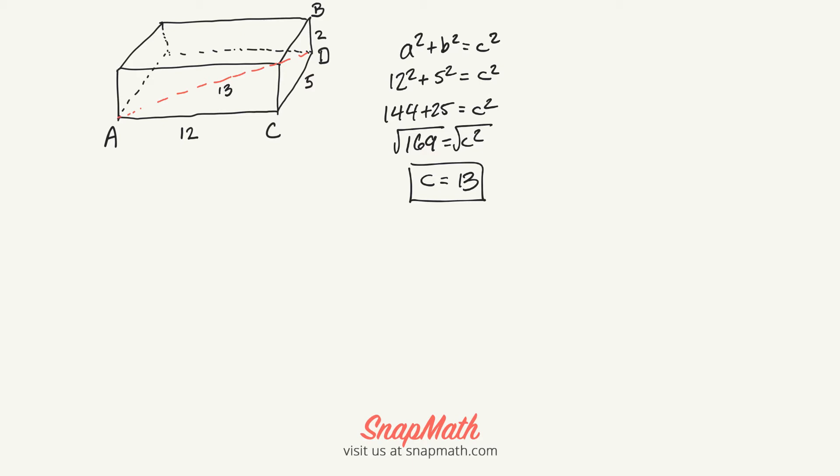Now we need to find this distance. If you can see that triangle there, it makes another right triangle.